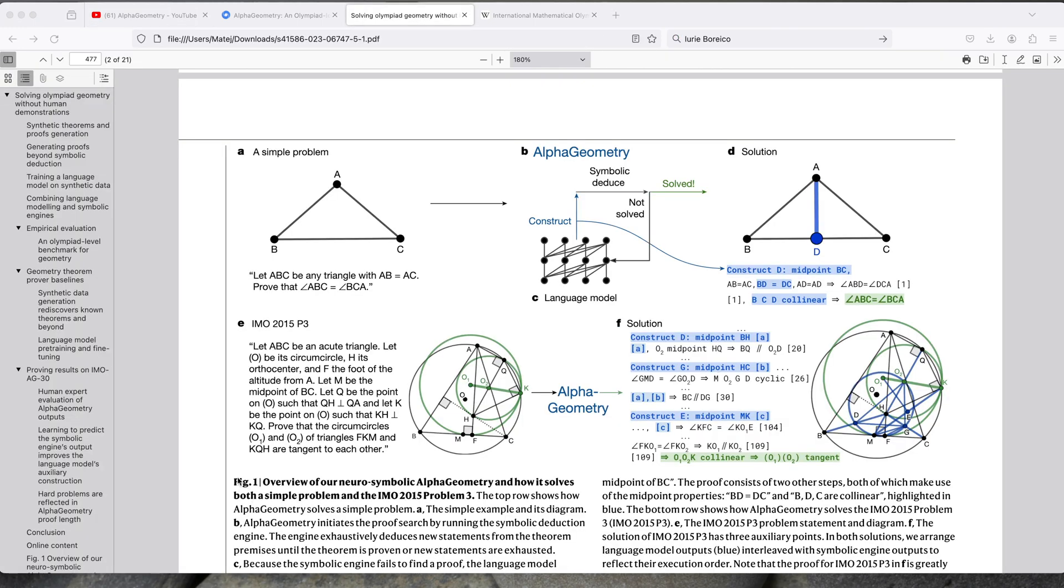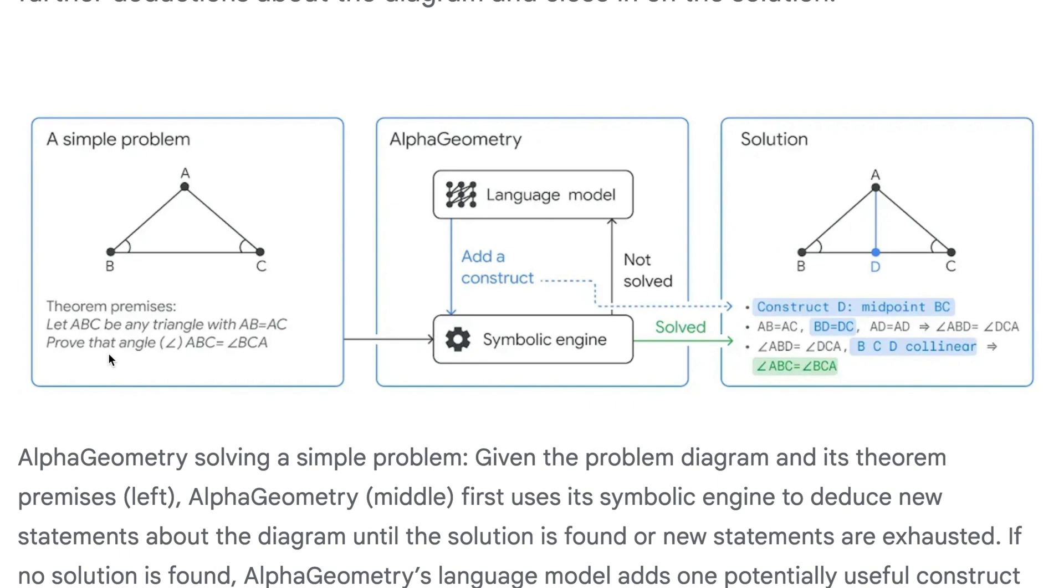The model overview is shown in figure 1B right here, but I think it's much better described in the blog and in the video. So let's go into the blog right here. So imagine you have a simple geometry problem, and then it goes into the symbolic engine. This is kind of the old school engine that they use to solve mathematical problems, and if the symbolic engine is able to solve the problem, then everything is good. It doesn't need the large language model.